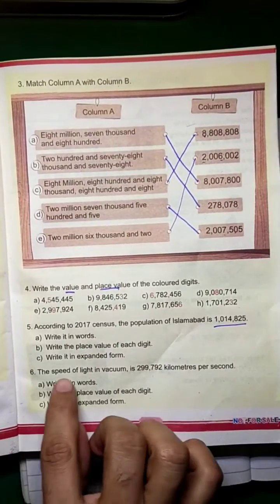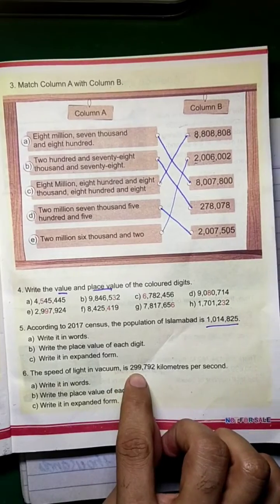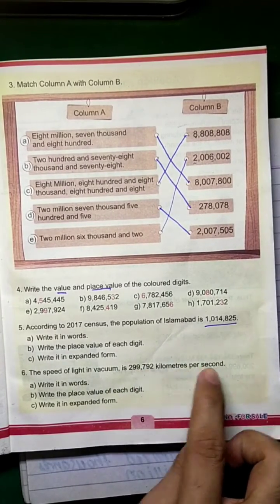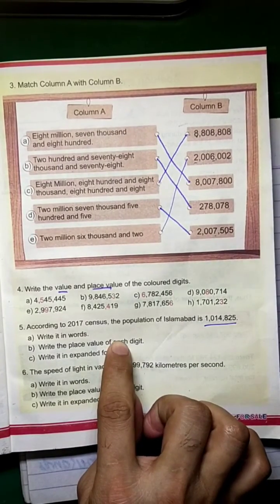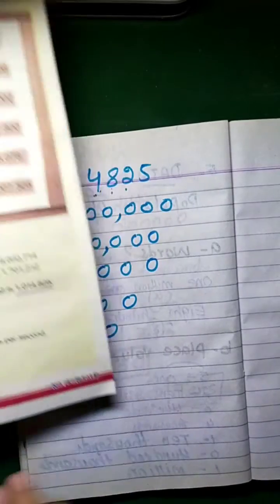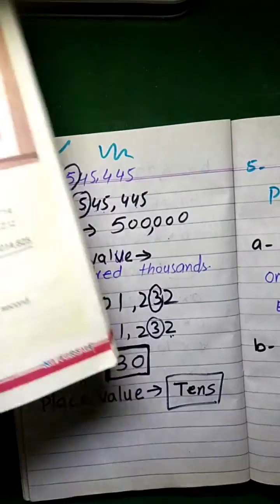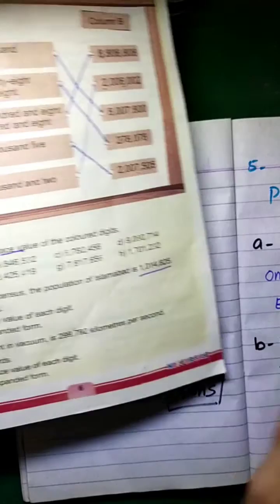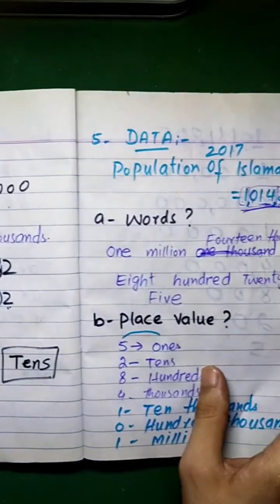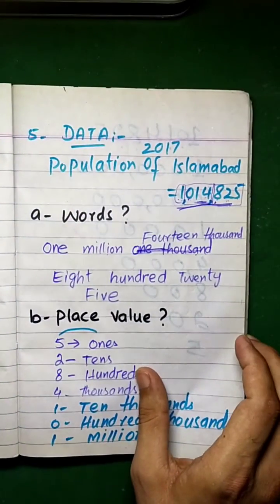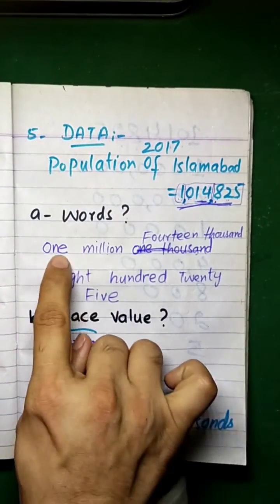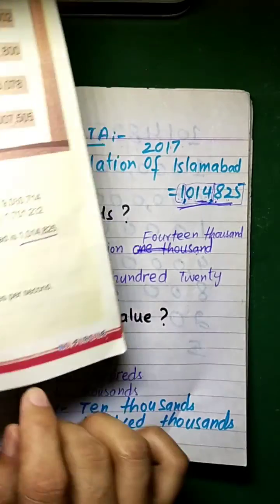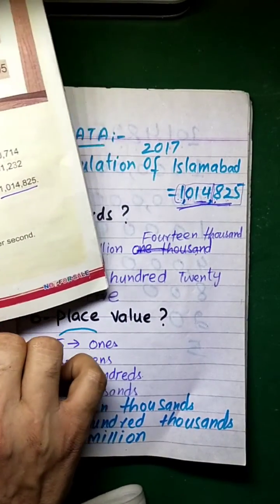The speed of light in vacuum is 299,792 km per second. That's the next question. We need to write it in words.